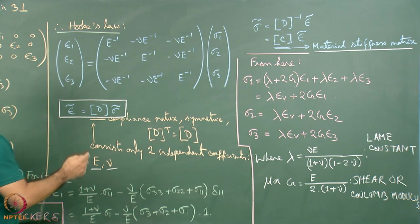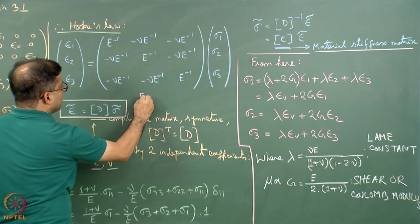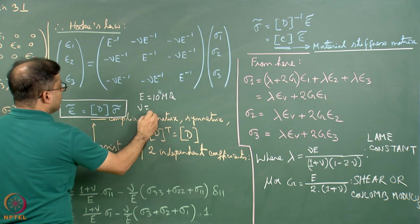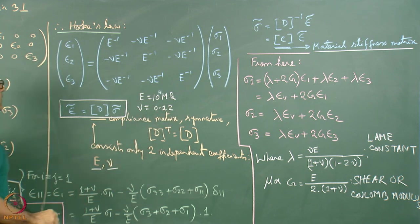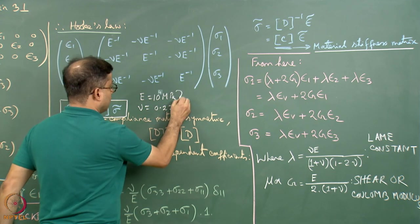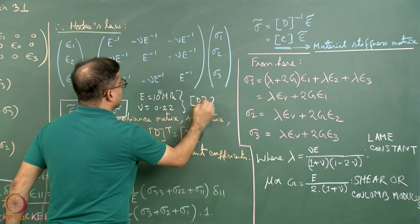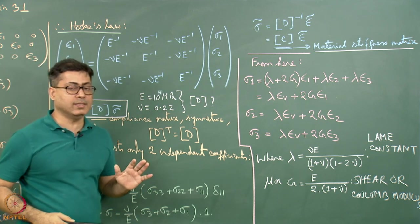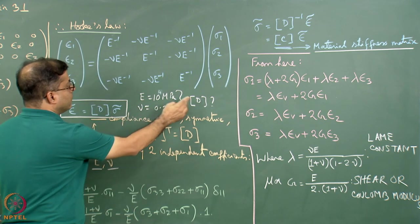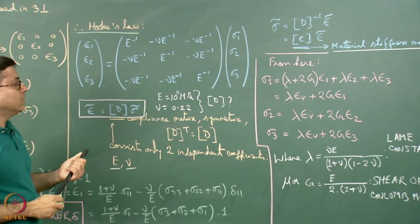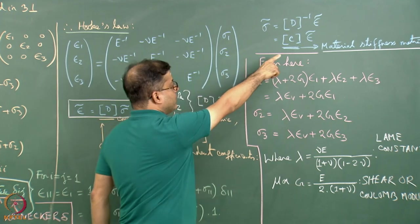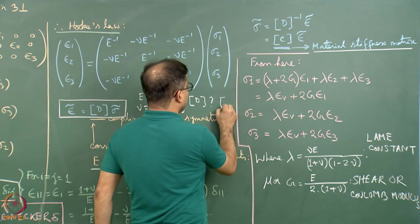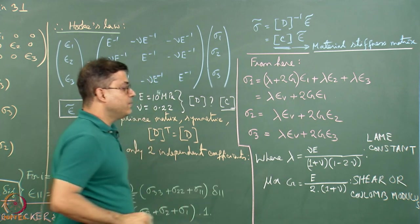As an exercise, given a realistic rock value of E = 10^? MPa and nu = 0.22, calculate the D matrix — that means writing all 9 elements. After finding D, also find the inverse C, the material stiffness matrix. It will be a lengthy exercise but worth doing. E and nu are given; find D, then find C from the same data set.